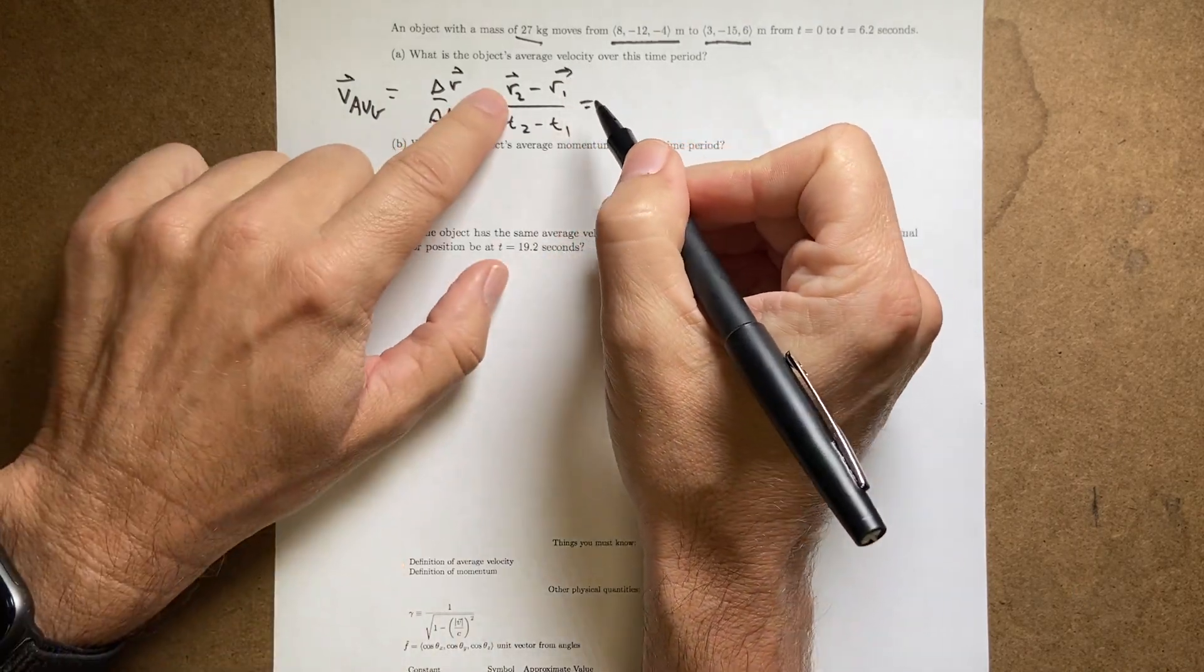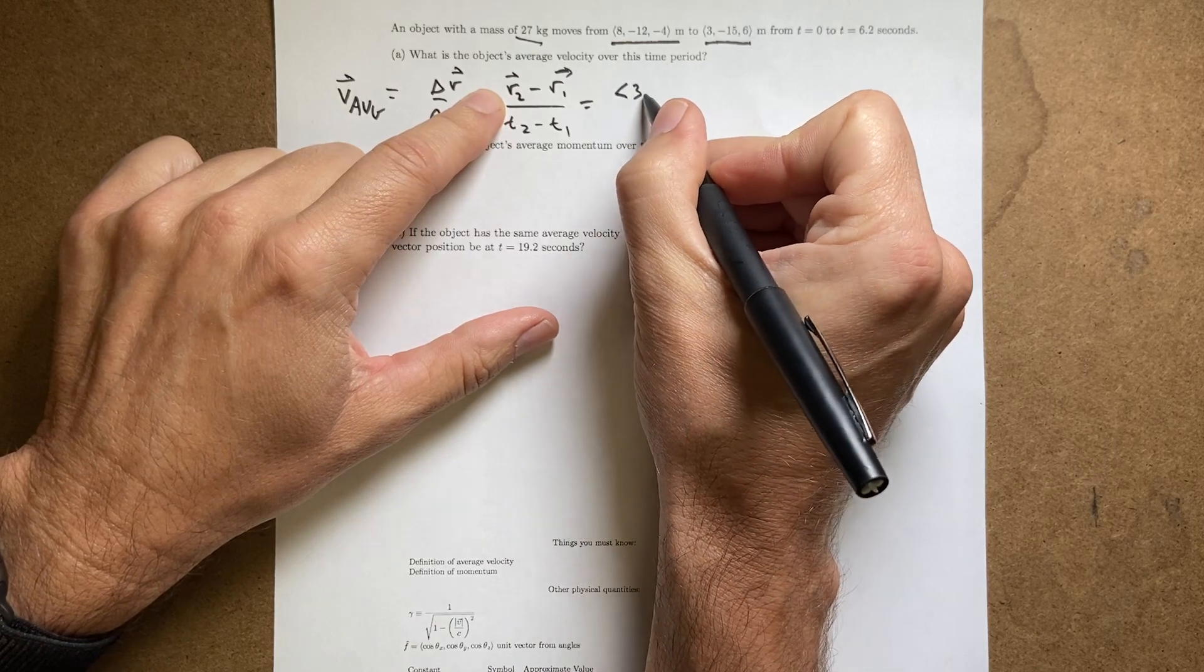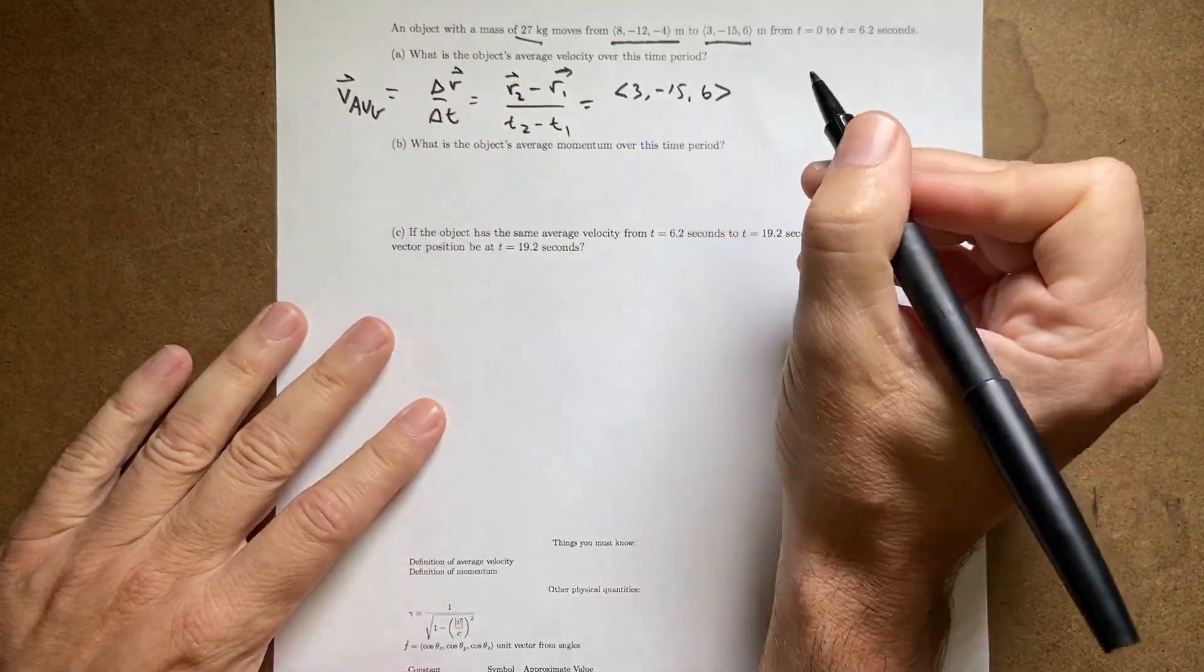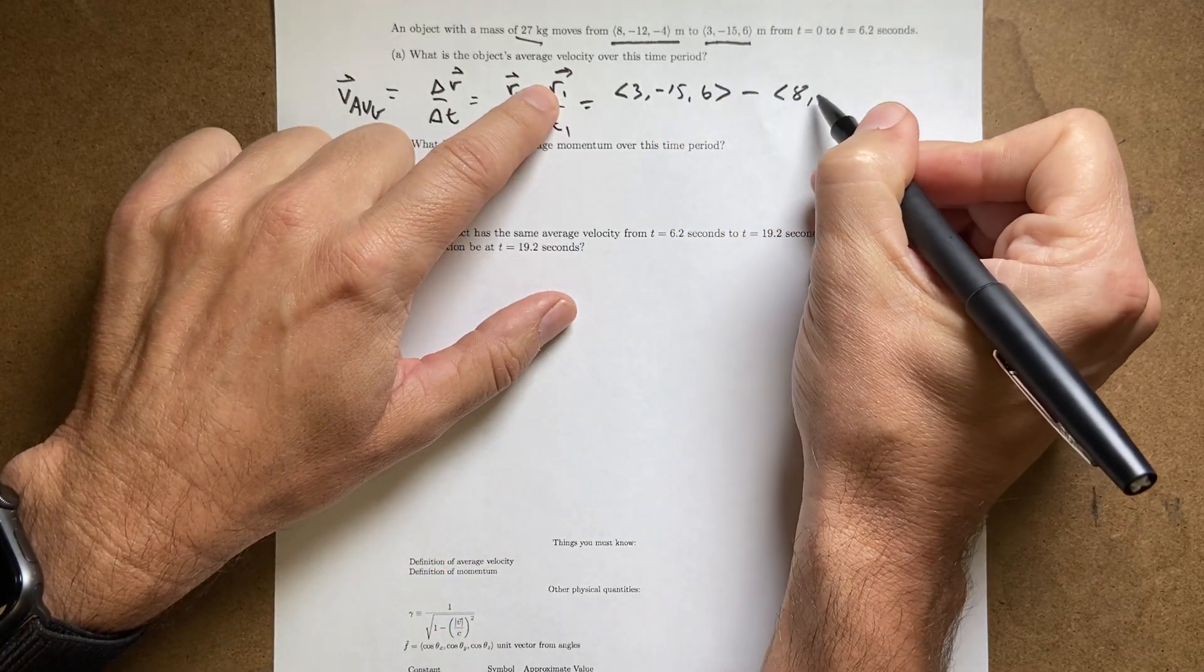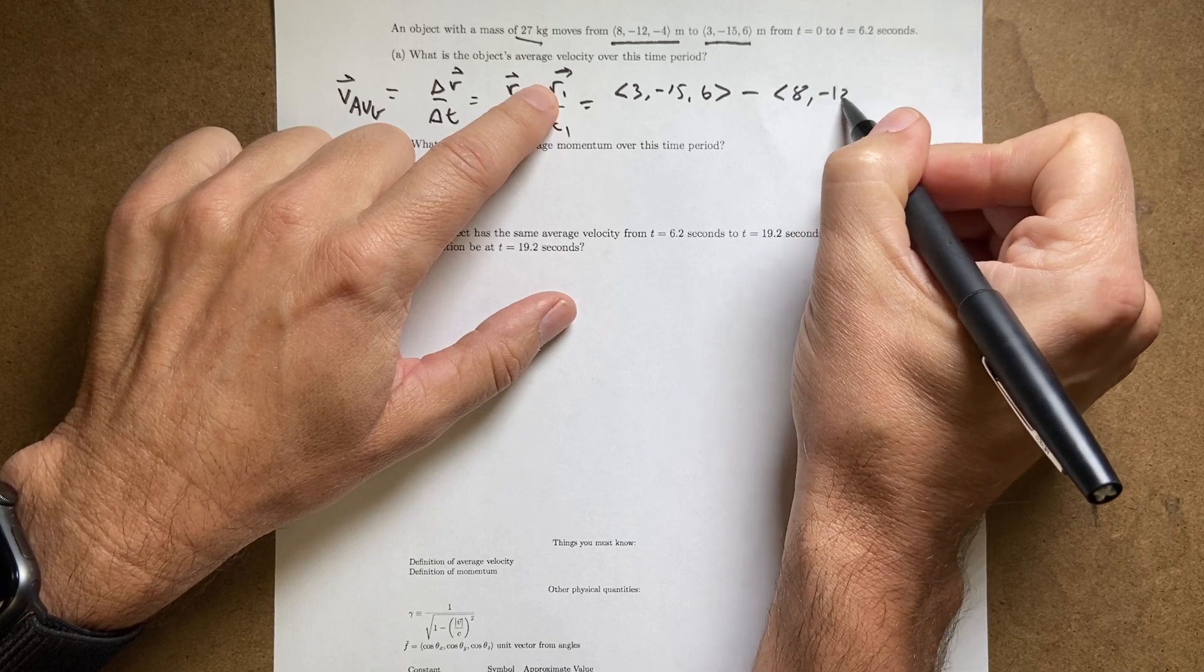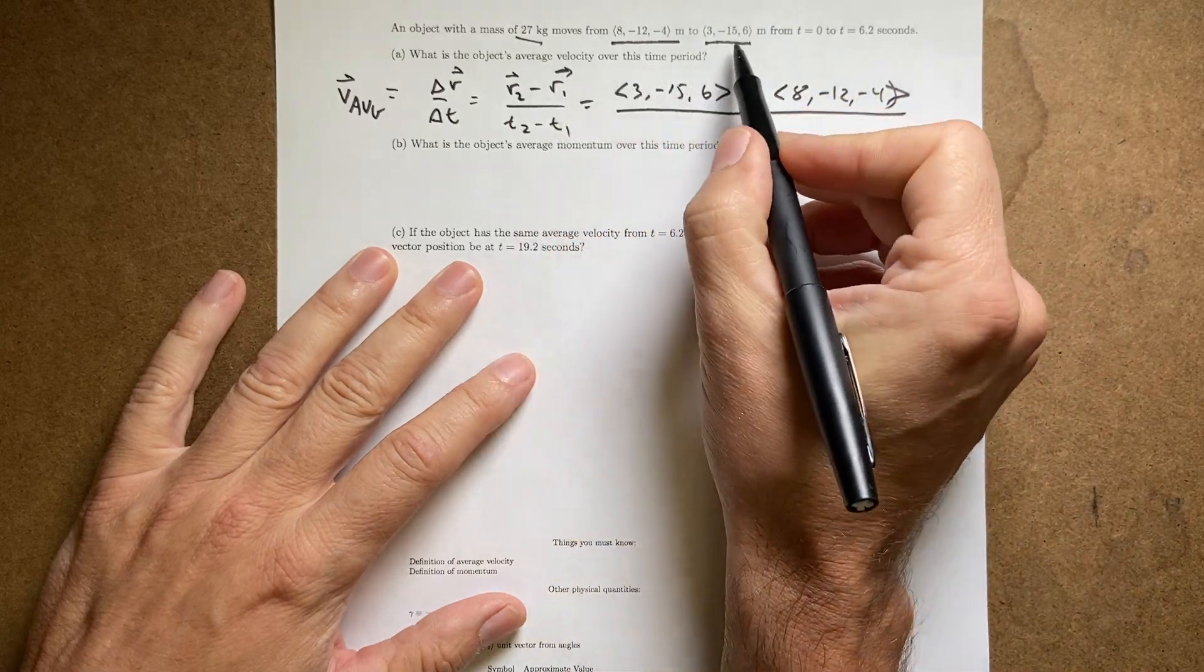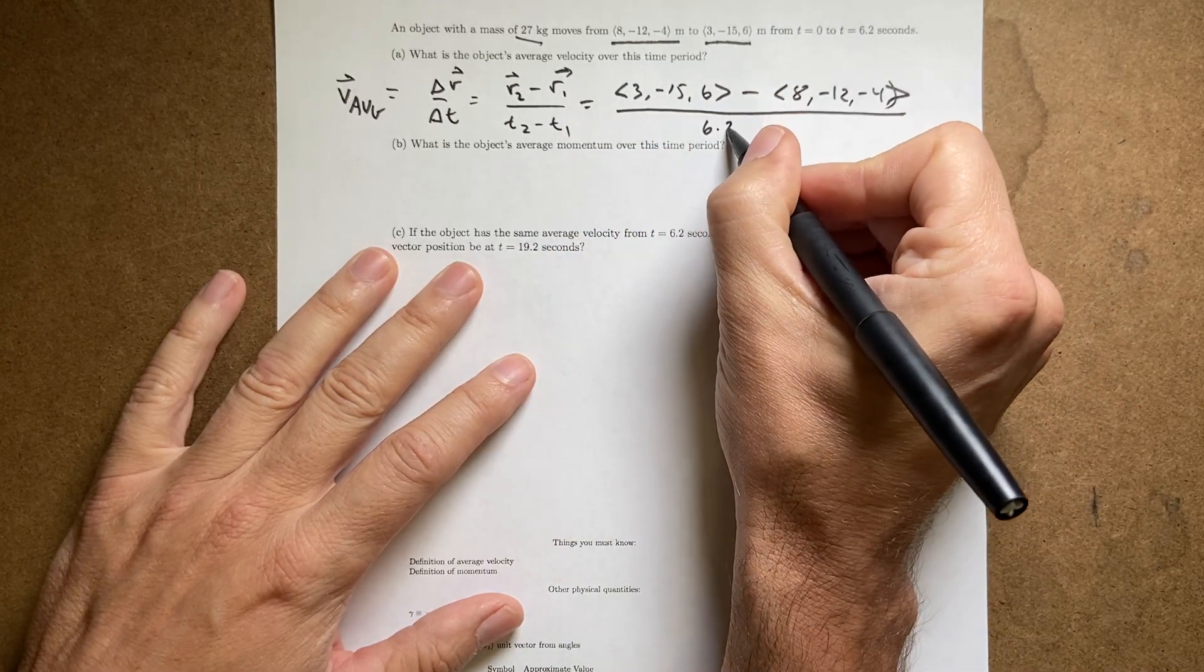So r2 is the final position which is right here. I'm going to write that as 3, negative 15, 6. I'm going to leave the units off just for simplicity. r1 is going to be 8, negative 12, negative 4. That's a vector. All of that divided by 6.2 minus 0. So I'm going to put 6.2.